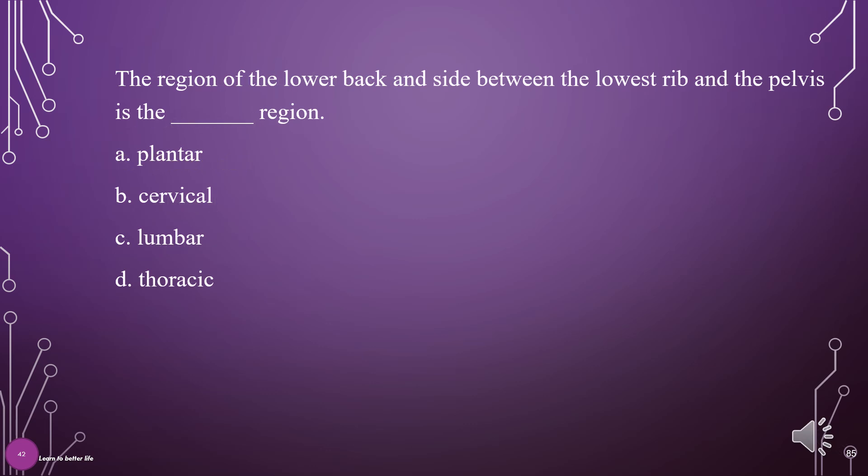The region of the lower back and the side between the lowest rib and the pelvis is the what region? A. Plantar, B. Cervical, C. Lumbar, D. Thoracic. The answer is C: Lumbar.